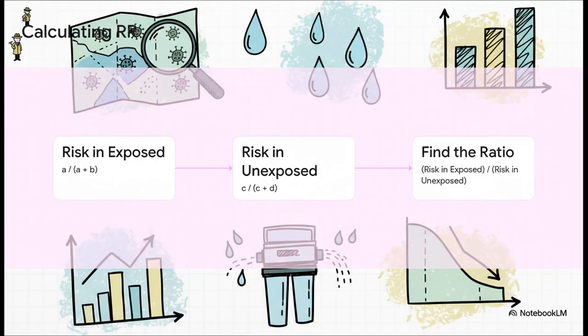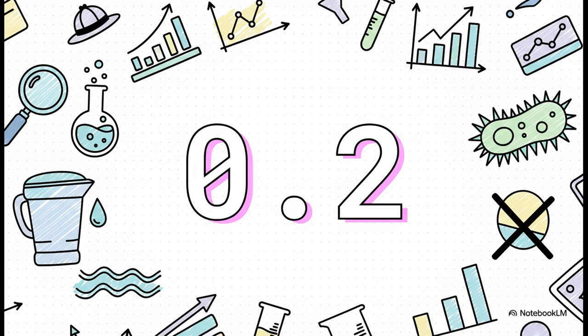All right, let's do the math. It's easier than it looks, I promise. First, we figure out the risk for the exposed group, the ones with the filter. That's just A divided by the total for that row. So, 10 sick people out of 500. That gives us a risk of 0.02, or 2%. Simple enough. Then we do the same for the unexposed group. That's 50 sick people out of 500, which is a risk of 0.10, or 10%. Now, for the final step, we just divide the first number by the second. And what do we get when we do that? We get this. 0.2. That's it. That's our relative risk. It's just one little number. But believe me, it speaks volumes.